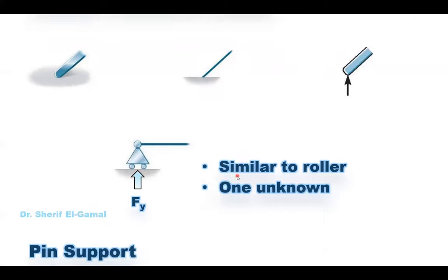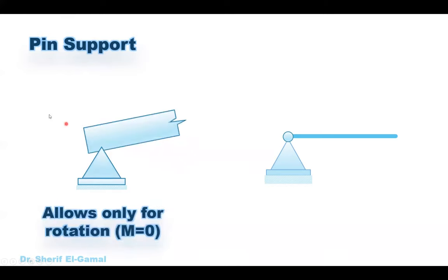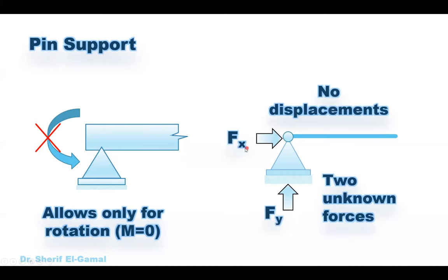After finishing all of these supports we will move to the pin supports. The pin support allows only for rotation about the pin. So it allows for rotation, therefore there is no moment, but it does not allow for vertical or horizontal displacement — in this case you will have two unknowns. The vertical reaction is called FY and the horizontal reaction is called FX: two unknown forces and no moment. Whenever you have a pin support, the moment equals zero, similar to the roller support, but in the pin support we have two unknowns.